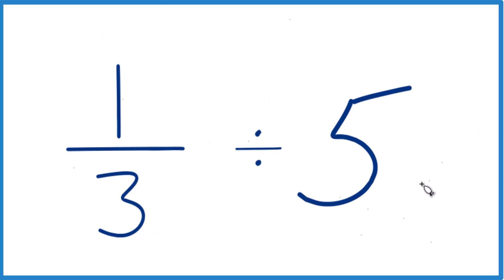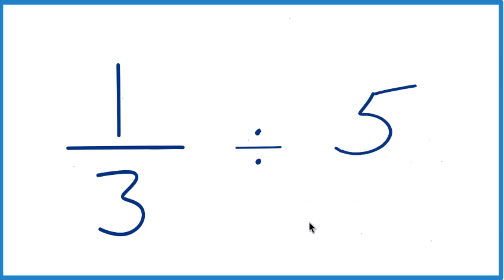So it's helpful to start out, let's call the 5 here 5 over 1. Because 5 divided by 1 is still 5, but now things line up kind of nice.